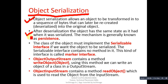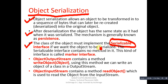The class of the object must implement the Serializable interface if we want the object to be serialized. This is important — if you want to store an object into a file, you have to implement this interface. The Serializable interface contains no methods; this kind of interface is called a marker interface.